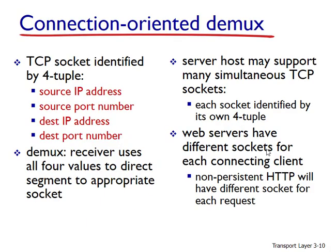To understand TCP demultiplexing we have to take a close look at TCP sockets and TCP connection establishment. One subtle difference between a TCP socket and a UDP socket is that the TCP socket is identified by four fields: source IP address, source port number, destination IP address, and destination port number. When a TCP segment arrives from the network to a host, the host uses all four values to direct or demultiplex the segment to the appropriate socket.